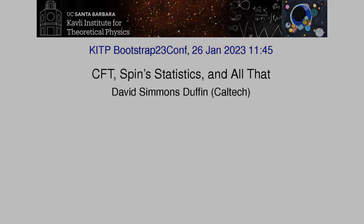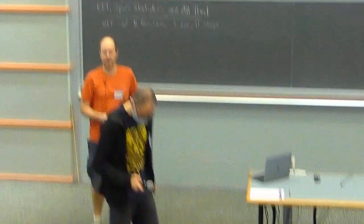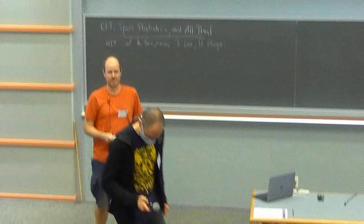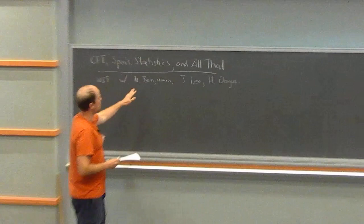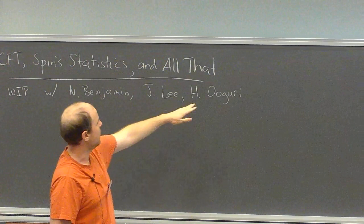Thank you so much. It's really a pleasure to be back here giving this talk, and thanks to the organizers for organizing such a great conference. I'm going to talk about work in progress with Nathan Benjamin, J. Ha Lee, who's in the audience, an excellent graduate student at Caltech, and Hiroshi Oguri. I have to give credit to Nathan for this joke in the title — those of you who know him will recognize his distinct touch.